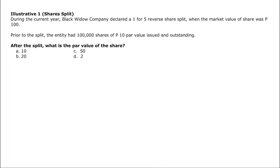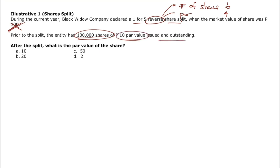Illustrative problem 1: Black Widow Company declared a 5-to-1 reverse share split. Prior to the split, the entity had 100,000 shares of 10 peso par value issued and outstanding. After the split, the par value of the shares will be 50 pesos — that is the final answer.